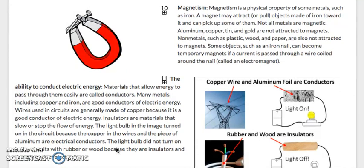Magnetism. Magnetism is a physical property of some metals, such as iron. A magnet may attract or pull objects made of iron toward it and can pick up some of them. Not all metals are magnetic. Aluminum, copper, tin, and gold are not attracted to magnets. Non-metals, such as plastic, wood, and paper, are also not attracted to magnets. Some objects, such as an iron nail, can become temporary magnets if a current is passed through a wire coiled around a nail, called an electromagnet.